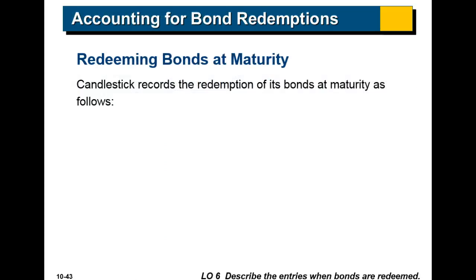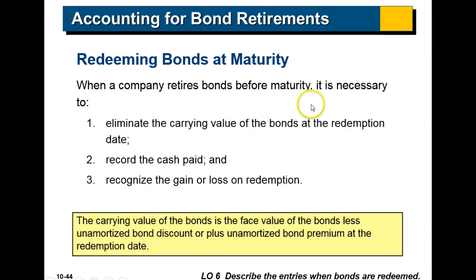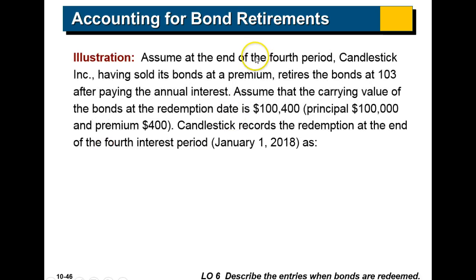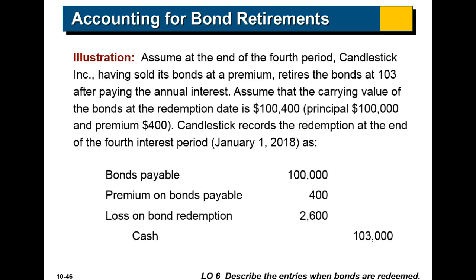Once bonds are redeemed, bonds payable zeroes out and cash equals those bonds payable. When a company retires bonds before maturity, there's extra work. At the end of the fourth period, Candlestick retires bonds at $103,000 after paying annual interest. The carrying value at redemption is $100,400. We debit bonds payable $100,000, debit the remaining premium, credit cash $103,000, and record a loss on bond redemption of $2,600.